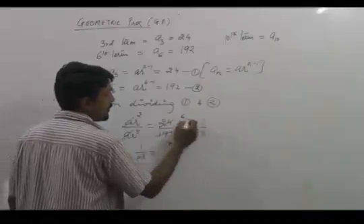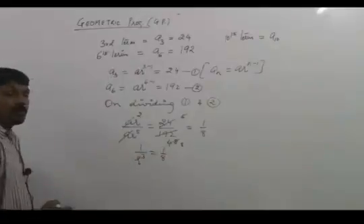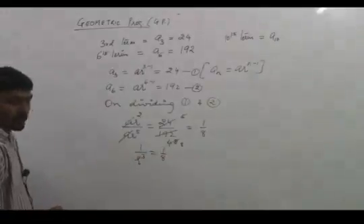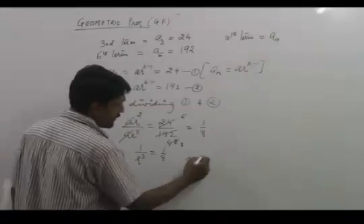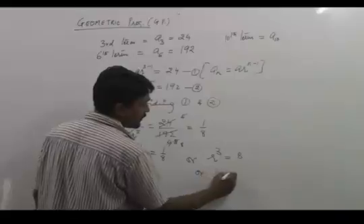So 1 over r cubed equals 1 over 8. When we cross multiply, r cubed equals 8, so r equals 2.